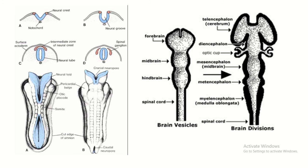This leaves a tube-like structure. The cranial end of this tube dilates and forms three primary brain vesicles: the prosencephalon, mesencephalon, and rhombencephalon. The prosencephalon is then converted into two vesicles — the telencephalon and diencephalon — and the mesencephalon forms the midbrain.